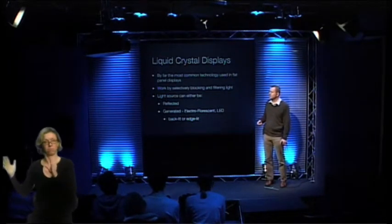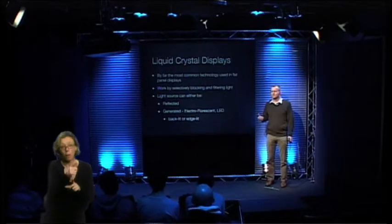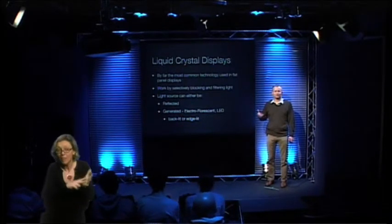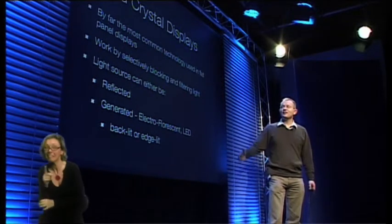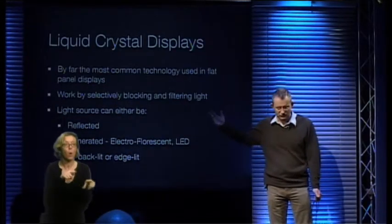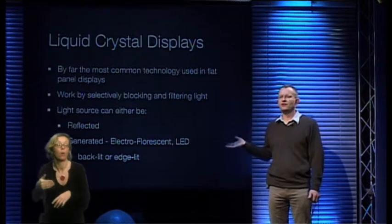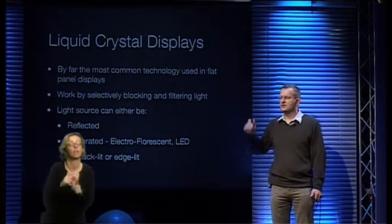By far the most common flat panel technology we'll come across today is LCDs. Who's got an LCD TV at home? Who's got a CRT — an old big glass tube? Who's got a plasma? Nobody can afford a plasma — nor can I. But the main type you're going to come across is LCDs. All of the monitors in the lab are LCD displays. Generally the vast majority of computer monitors nowadays are LCDs. If you want a CRT computer monitor, you can pick one up for next to nothing, because people are chucking them away. Whereas LCD monitors are the standard.